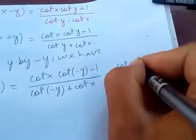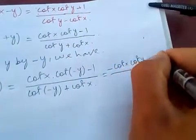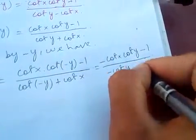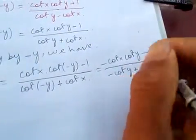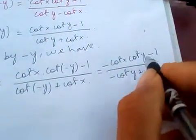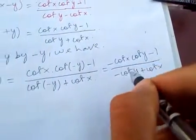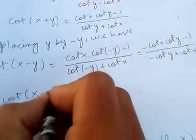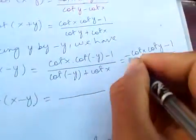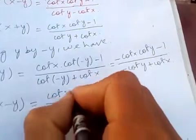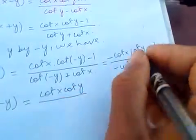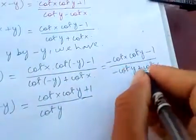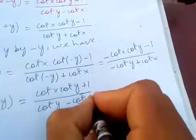So this is -cot(y) - 1 over -cot(y) + cot(x). Now dividing numerator and denominator by negative, then minus times minus, so we get cot(x - y) is minus minus plus, so it becomes plus, and this also plus 1, and this also plus, so cot(y) - cot(x).